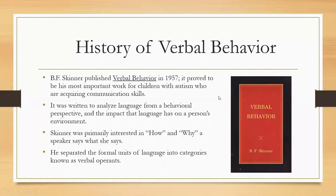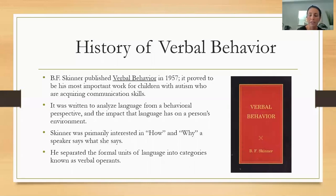A little bit of background about verbal behavior: BF Skinner published Verbal Behavior in 1957. It proved to be his most important work for children with autism who require communication skills. Verbal behavior was a theoretical approach on how language helps with communication skills — written to analyze language from a behavioral perspective and the impact that language has on a person's environment. What can I do and say that will get me something from my environment? Skinner was primarily interested in how and why a speaker says what they say — why we use words, what words get us, and how they are useful in communicating with others. He separated the formal units of language into categories known as verbal operands, breaking language into pieces and categorizing different types and how we acquire language.